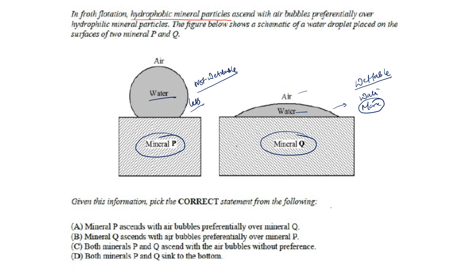Since mineral Q is wettable, that means it is hydrophilic. And mineral P will be hydrophobic — it is not going to get attached with water. So mineral P has the higher tendency to float with air bubbles, because it is not getting attached to water molecules. It will get attached to air and basically ascend. So mineral P ascends with air bubble preferentially over mineral Q.